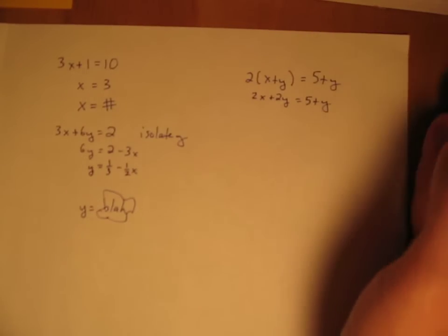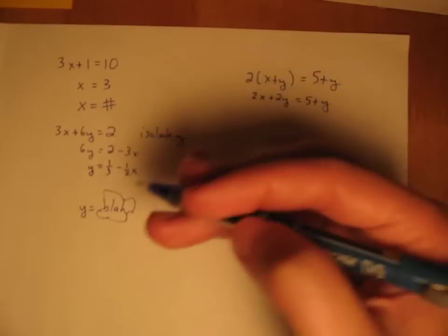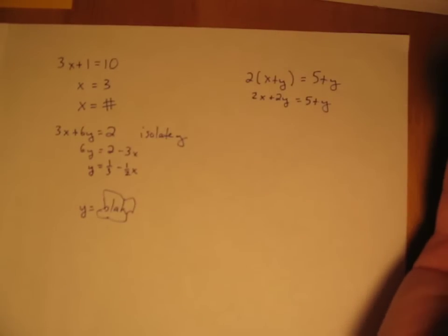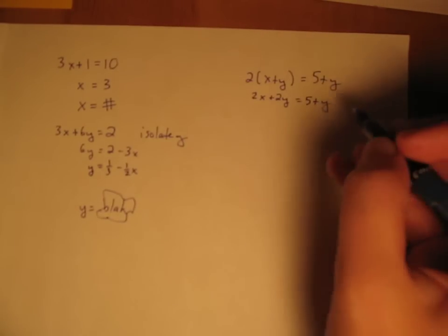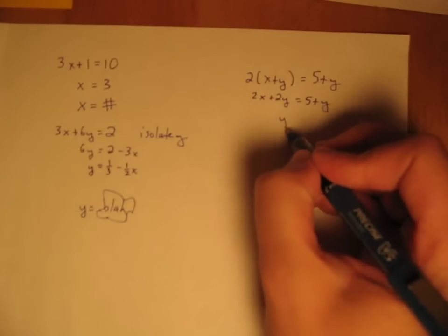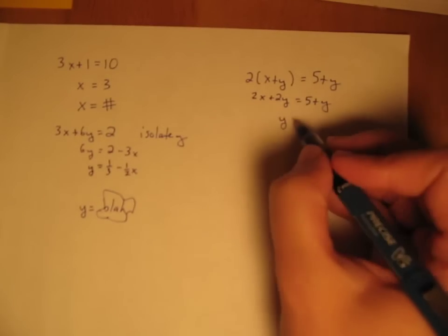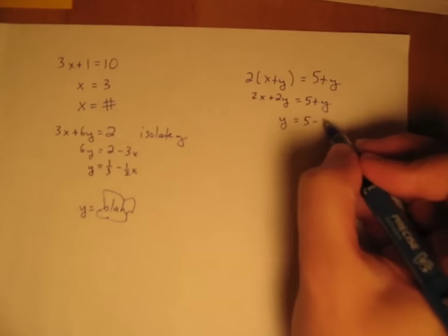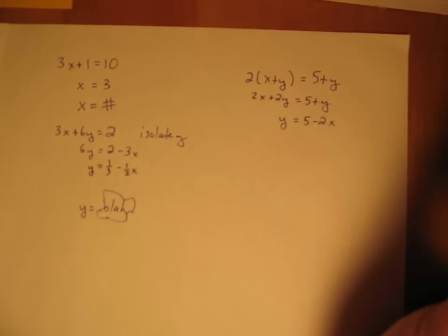So distributing we get 2x plus 2y equals 5 plus y. And then bring everything that's y to one side and everything that's not to the other, because remember we're trying to say what y is. Over here we'll just have the one y after subtracting y from there, and on this side we have 5 minus 2x and lo and behold we are miraculously done.